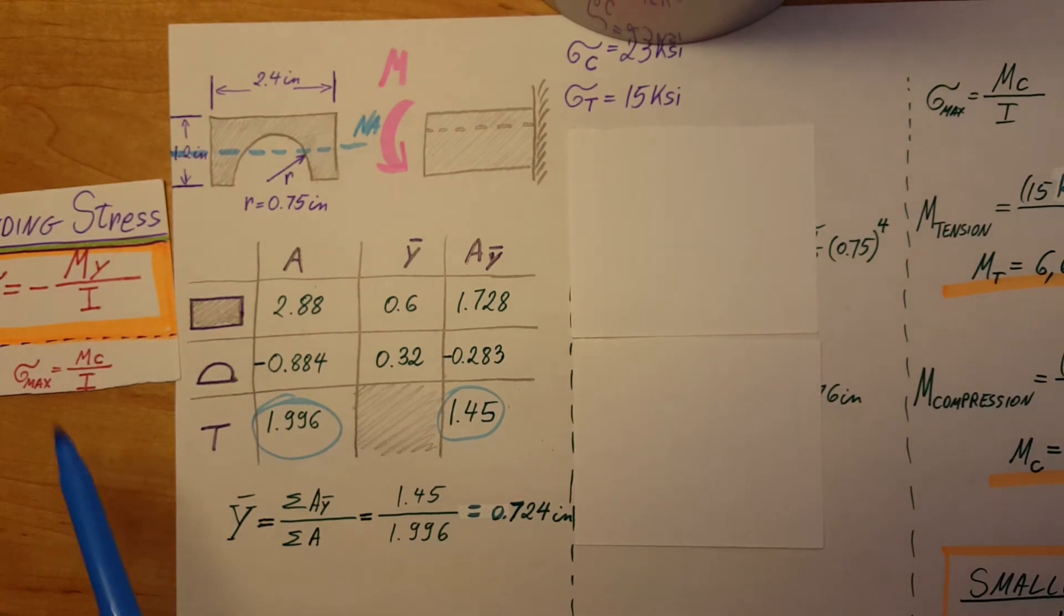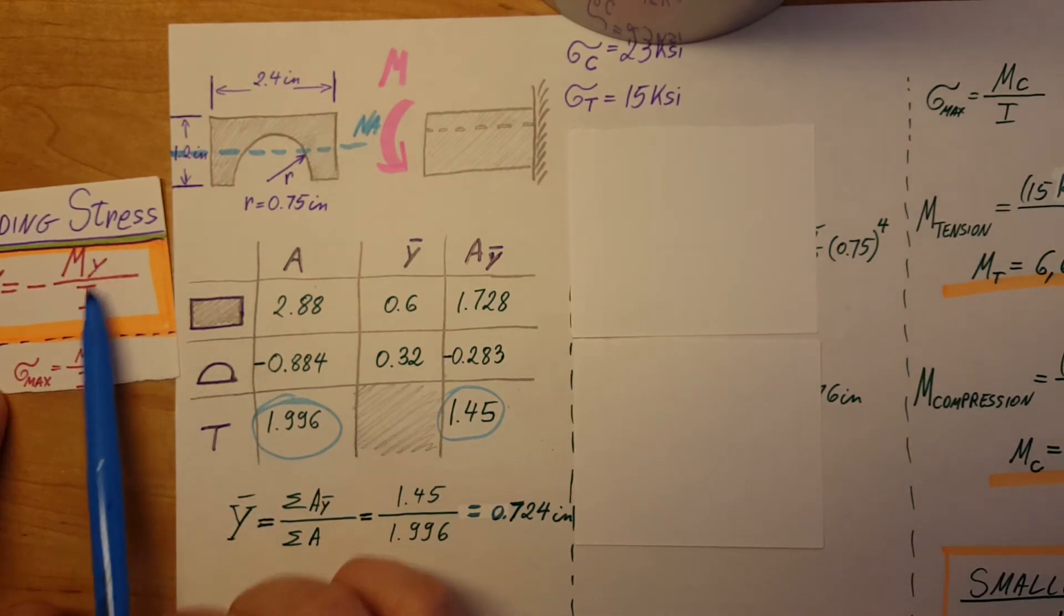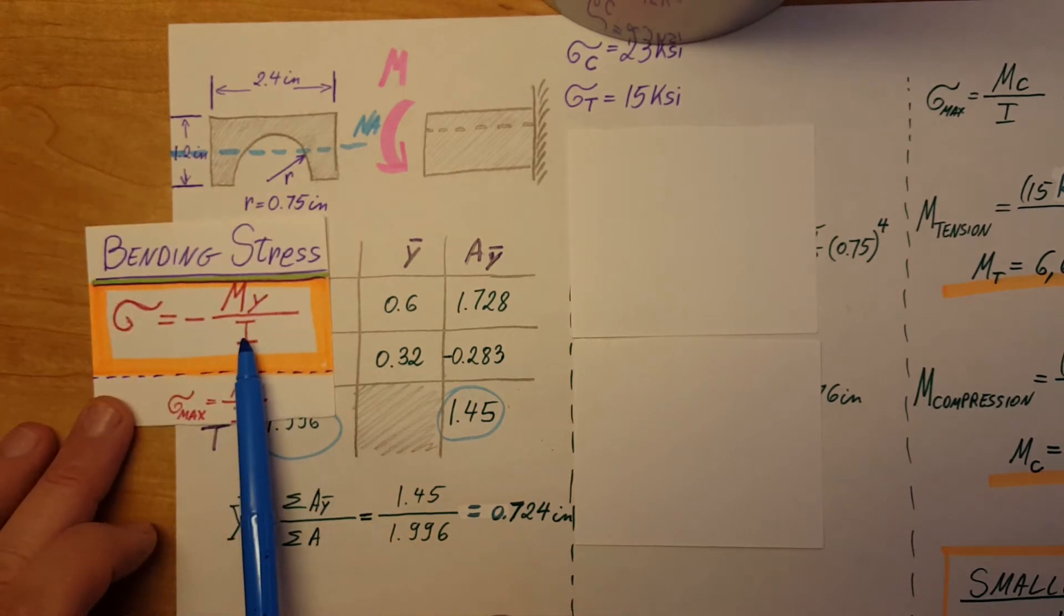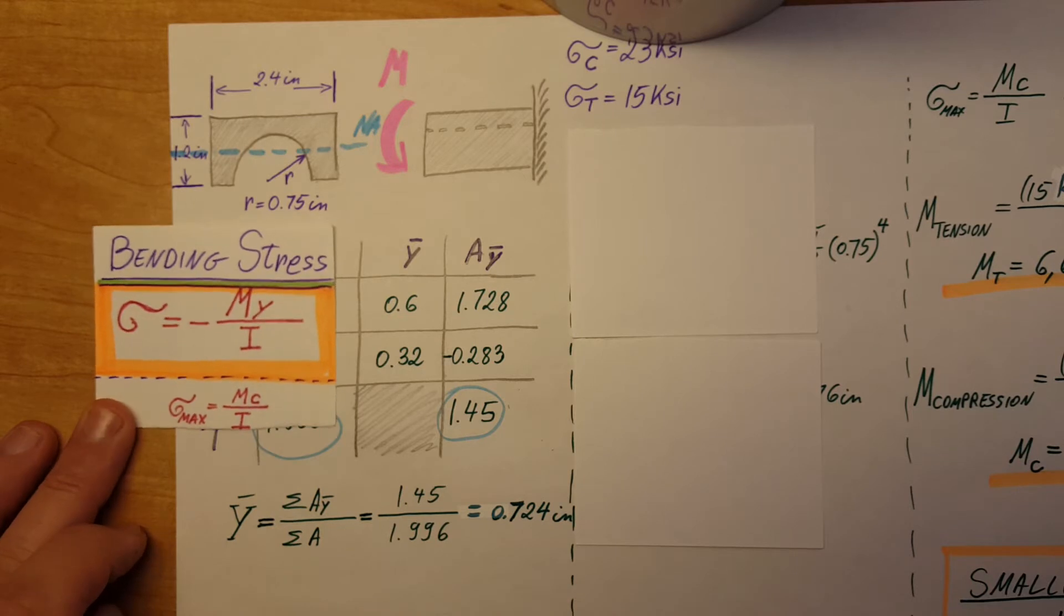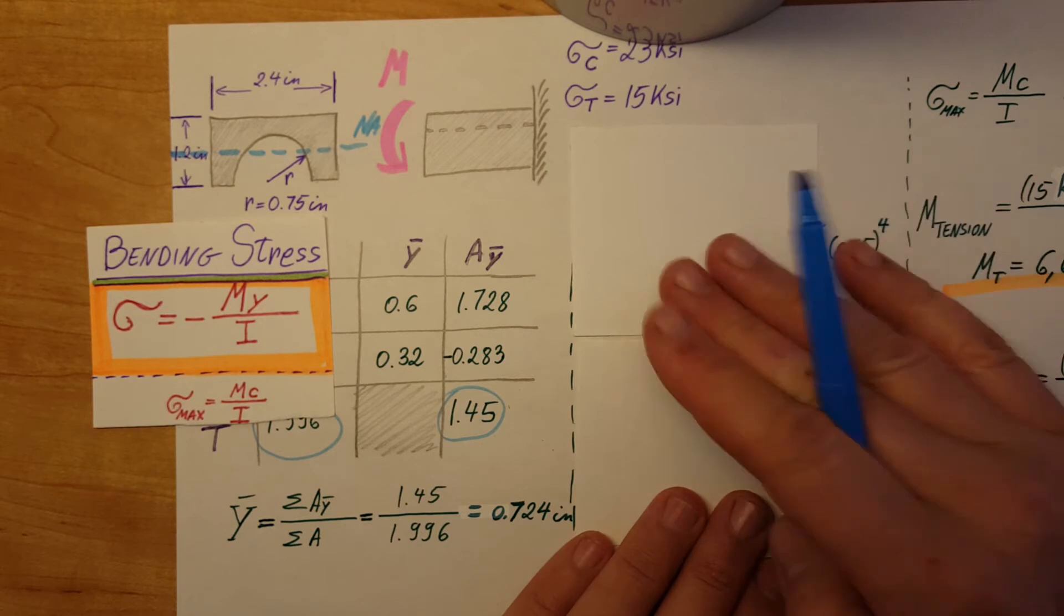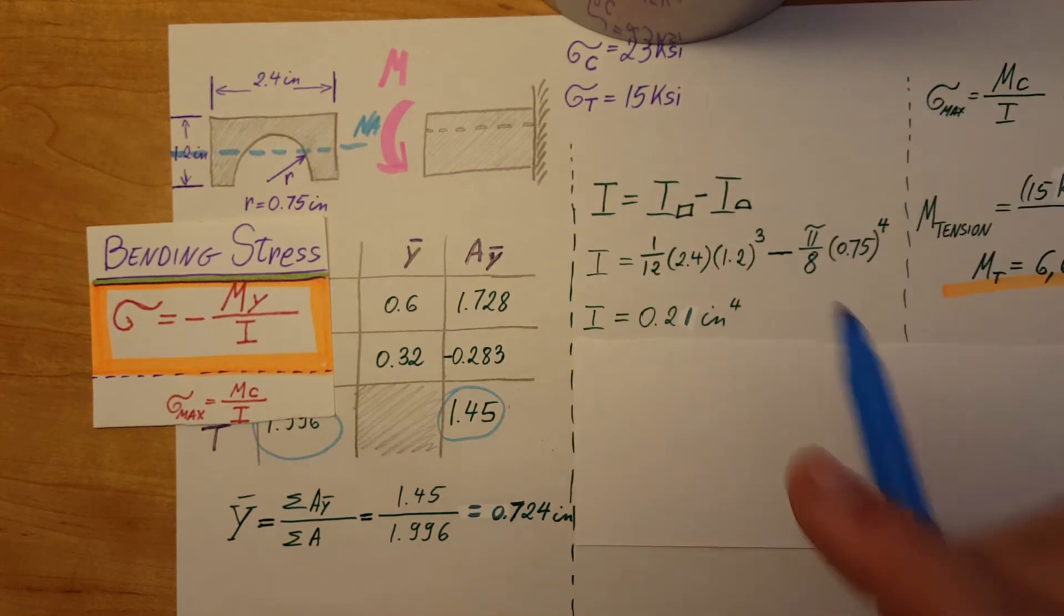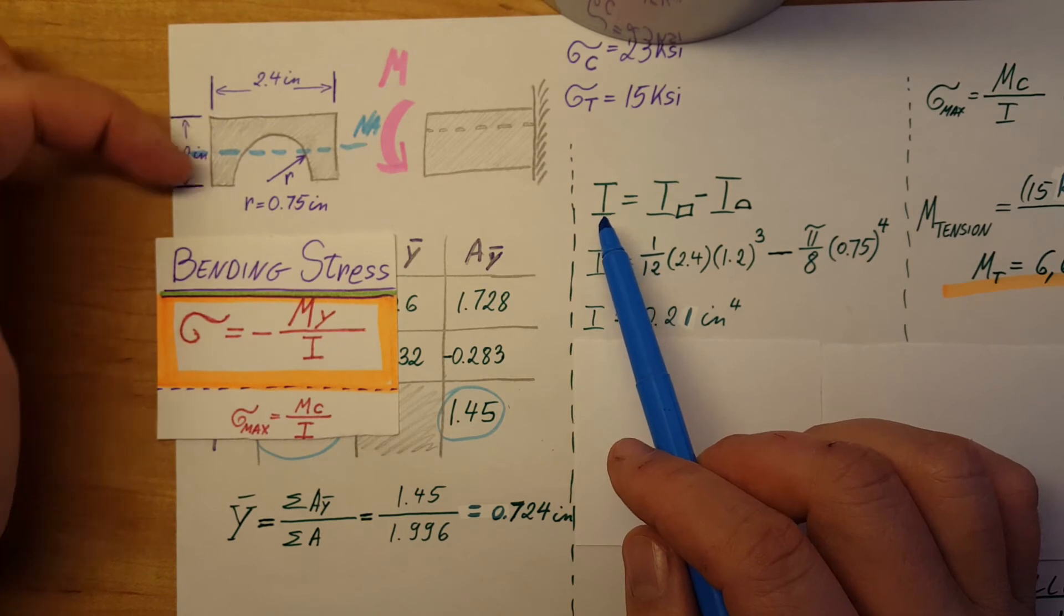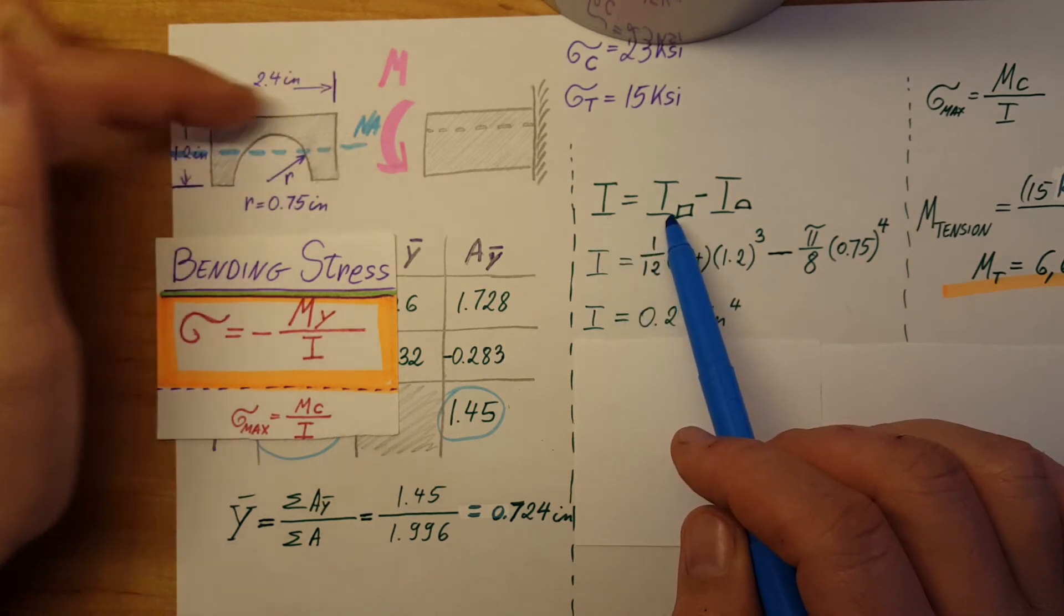Now we can start looking at our items from our stress formula. Let's look at the moment of inertia and then Y or the C, because we're working with the maximum version. For I, I'm going to calculate the inertia by calculating the inertia for the rectangle and subtracting the inertia for the half circle.